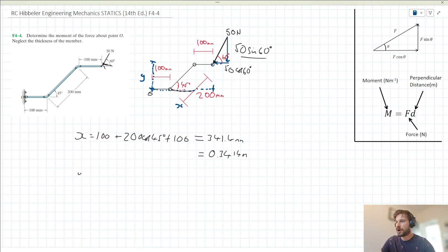Let's calculate Y. Y is just the vertical component of this 200 millimeter length, so Y equals 200 sin 45, which gives us 141.4 millimeters, or 0.1414 meters.